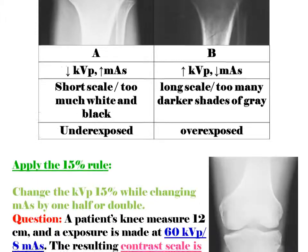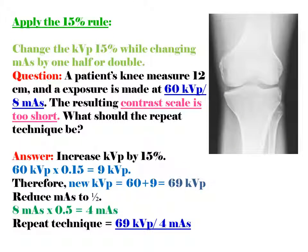To solve such problems, we apply the 15% rule: change the KVP by 15% while changing MAS by one half or double.